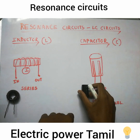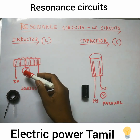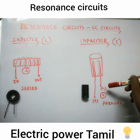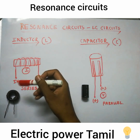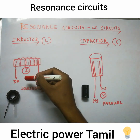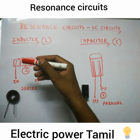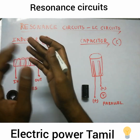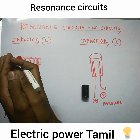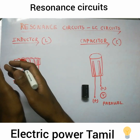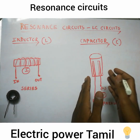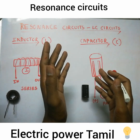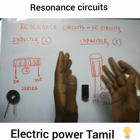If you look at the difference here, this is a series connection and this is a parallel connection. This will create a magnetic field and store the current in the magnetic field. This will discharge the supply power. If you take a magnetic field, you will accumulate the electric charges — the positive and negative charges are stored.